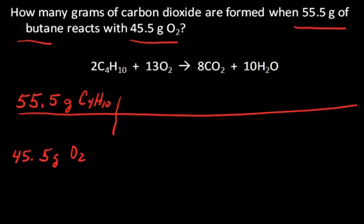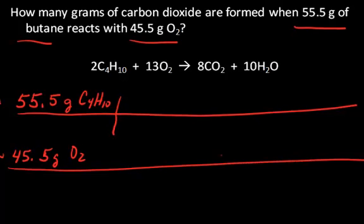Assume that you have plenty of oxygen. Calculate how much carbon dioxide would be formed from the given butane. Then repeat the calculation, only assume you have plenty of butane and you have 45.5 grams of oxygen, and calculate how much carbon dioxide will be formed. Whichever gives you the less amount is going to be the amount of product that you form.